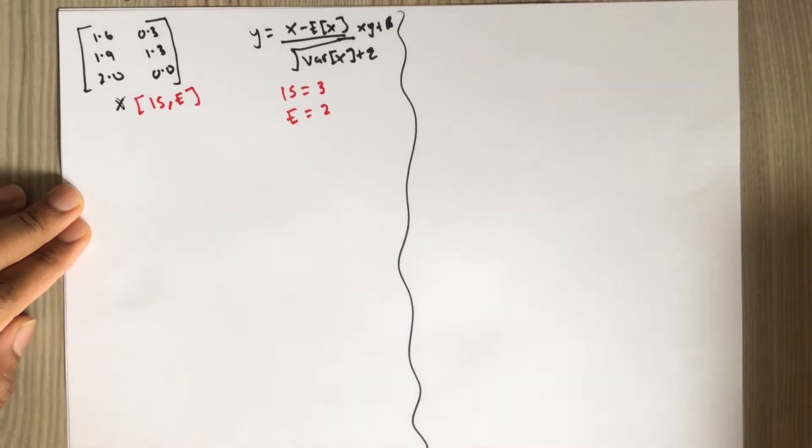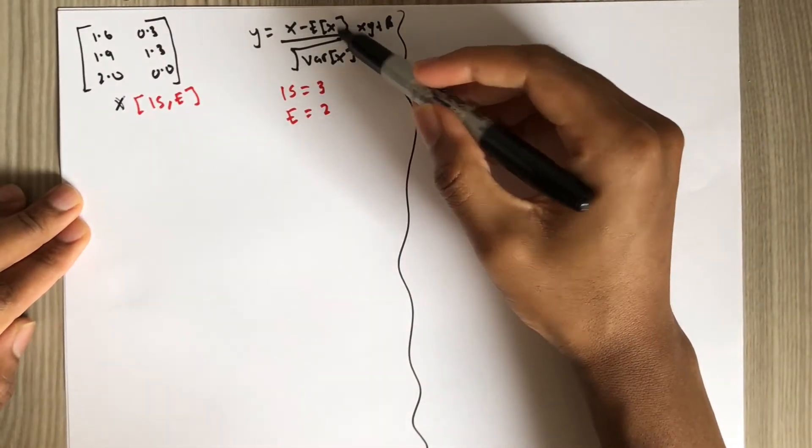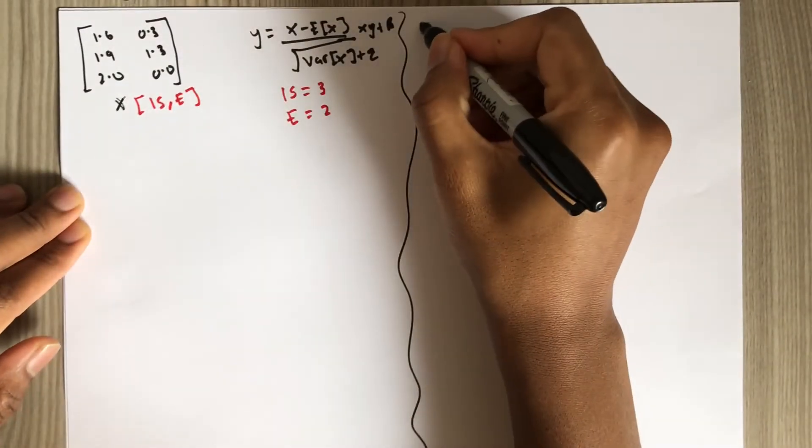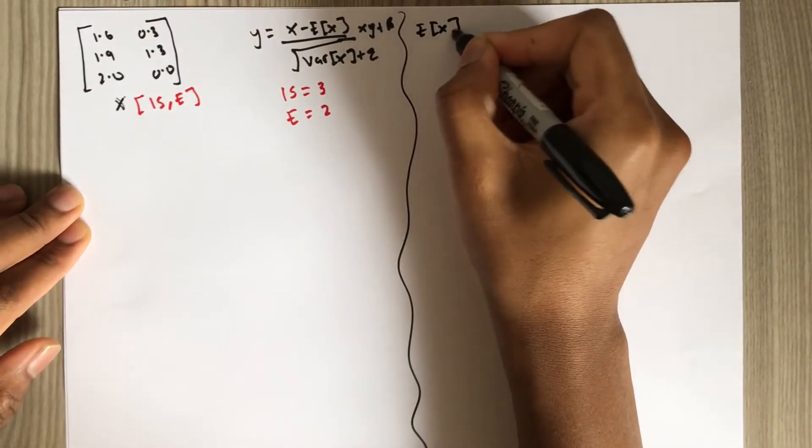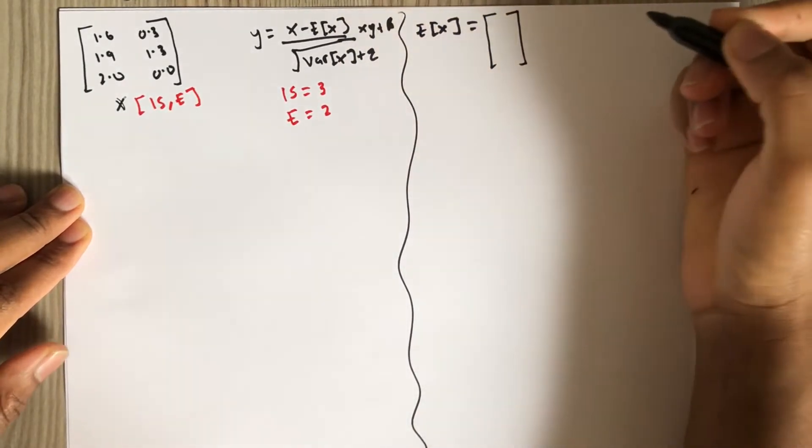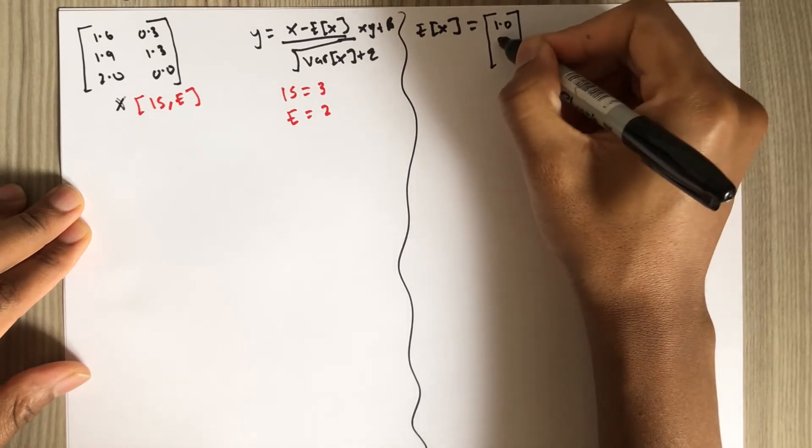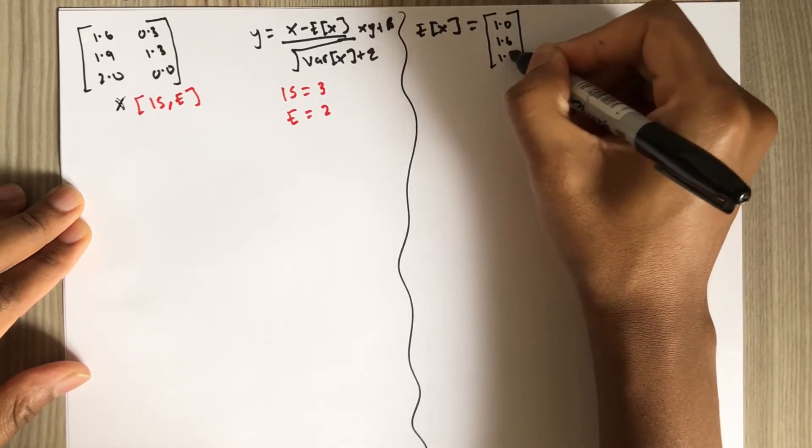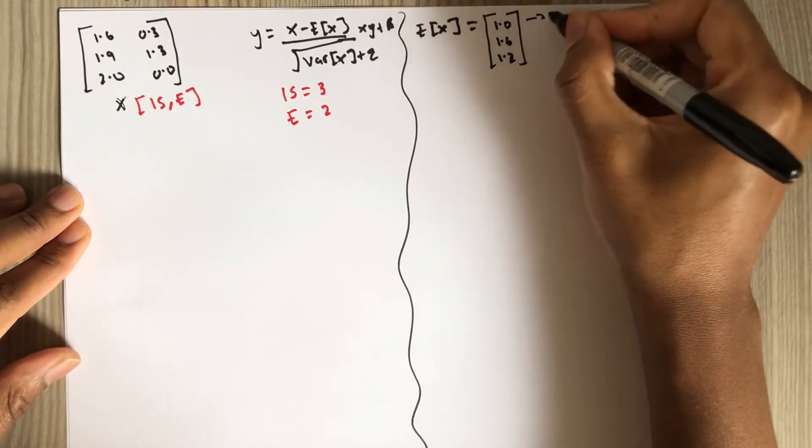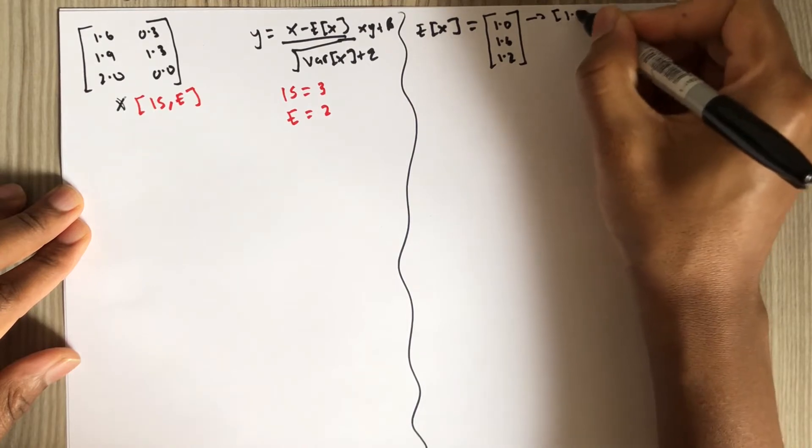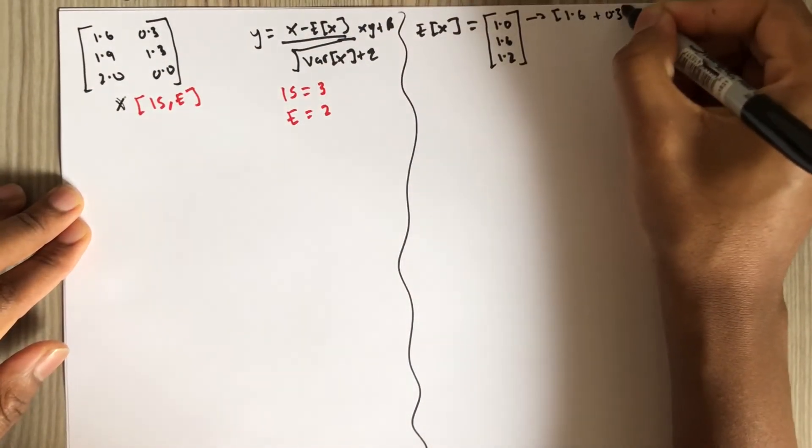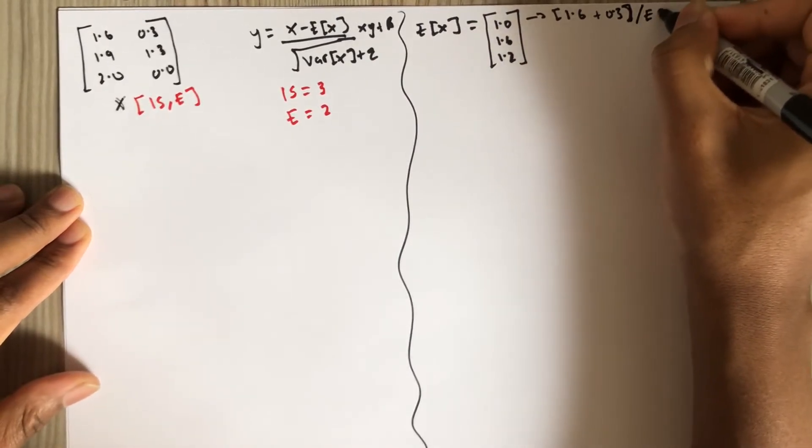So what we need to do right now is to compute the expected value and the variance then plug it in the formula to get y. So the expected value of x, which is like the mean is this. I have already calculated it. How did I get 1.0, for example? Well, I just add this 1.6 plus 0.3 then divide by e, which is 2.